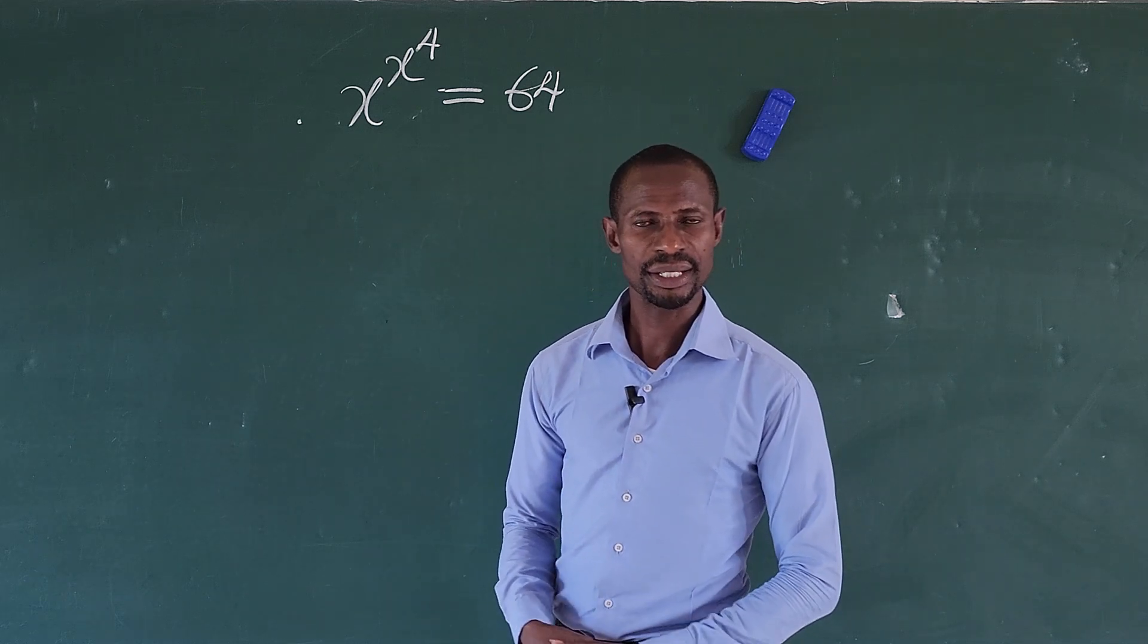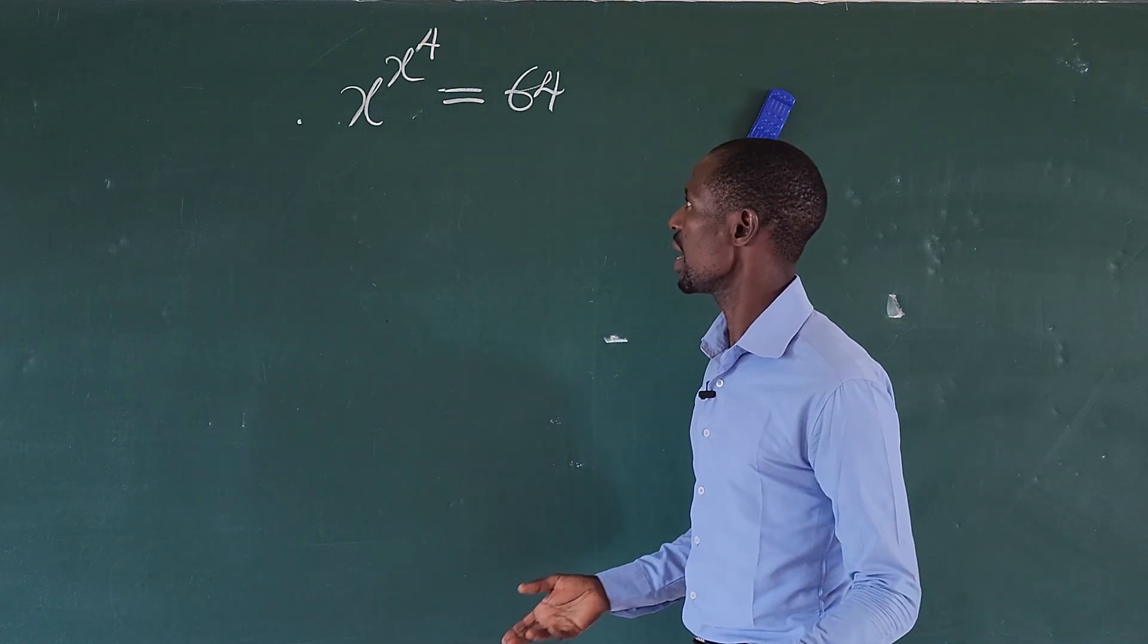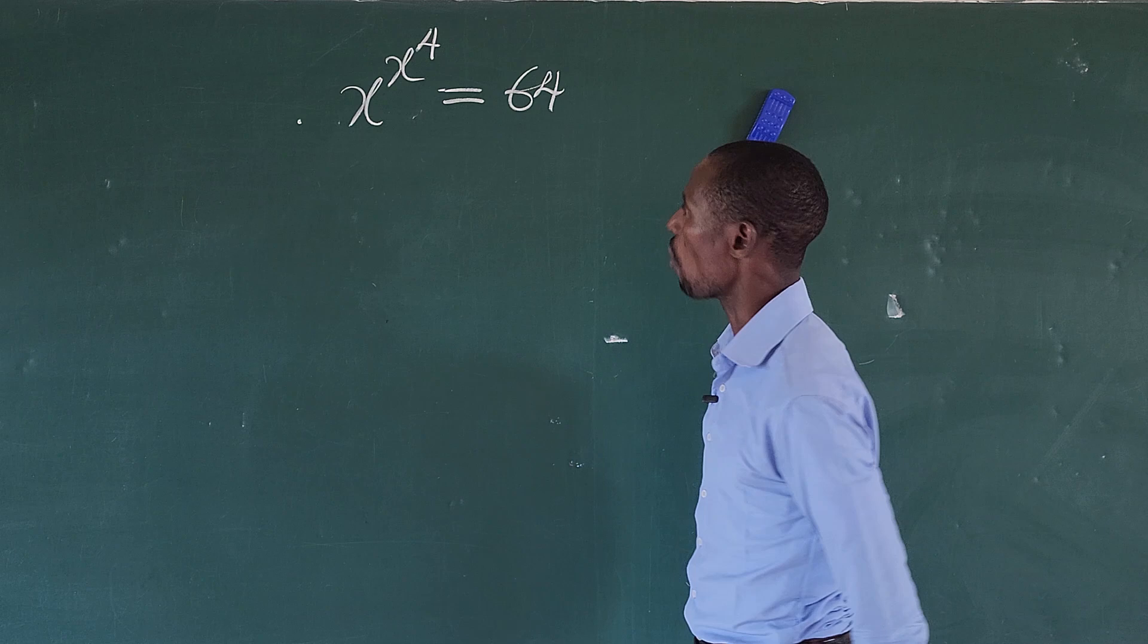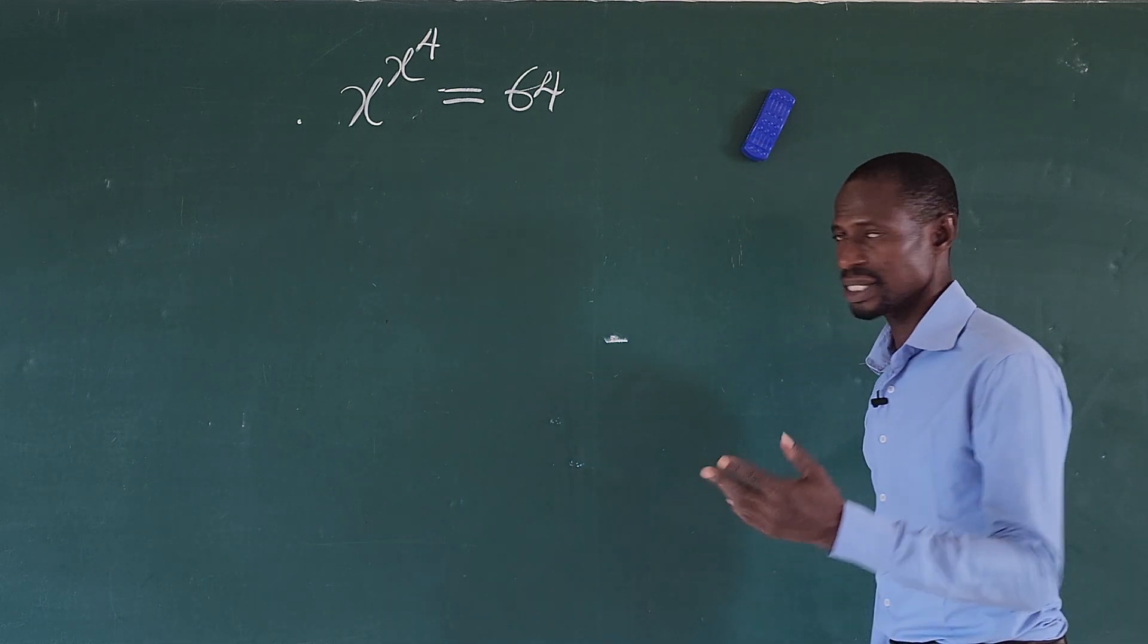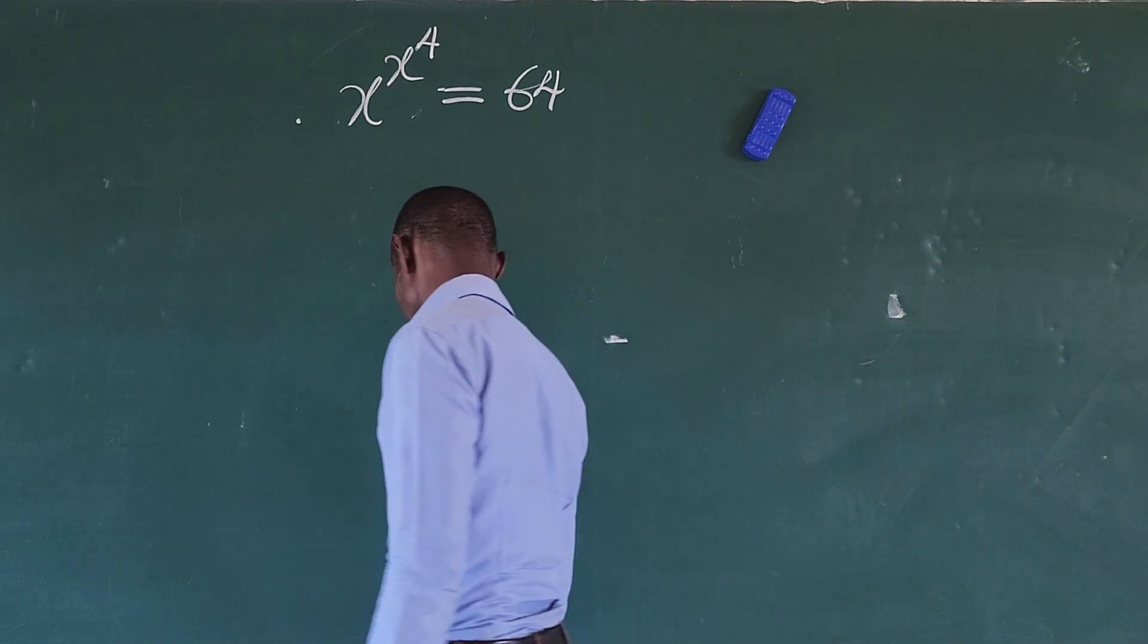Hello, welcome to today's class. Today we have this question before us here: x to the power of x to the power of 4 equal to 64. What is the value of x to this challenge here?